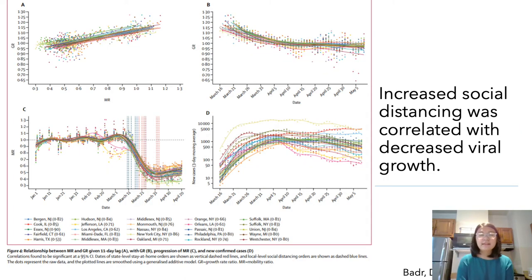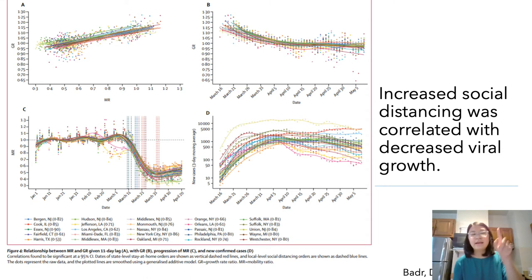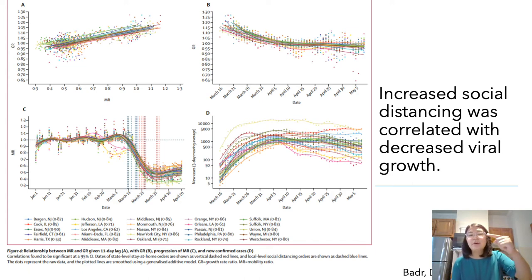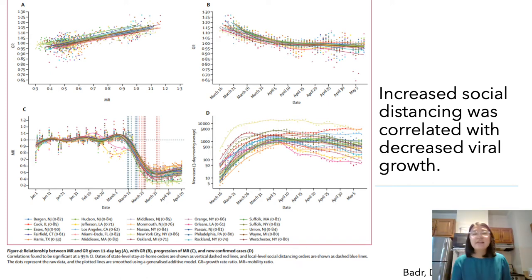Social distancing has shown to work to contain the pandemic. In panel C of the graph below, we can see the mobility scores on the y-axis and the dates on the x-axis. What we see is a fluctuation followed by a steep drop as people started to stay home in March. This correlates with panel D, which shows an increase in cases up into about March, where the case numbers start to plateau. This is a prime example of social distancing being used to flatten the curve.